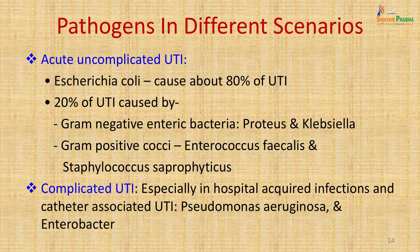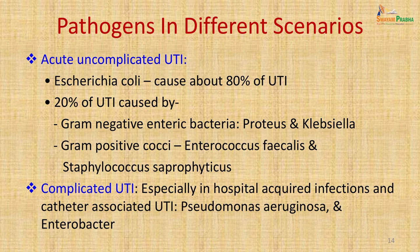Pathogens also differ by clinical scenario. In acute uncomplicated UTI, Escherichia coli causes about 80 percent of infections; 20 percent are caused by other gram-negative enteric bacteria such as Proteus and Klebsiella, as well as gram-positive cocci like Enterococcus faecalis and Staphylococcus saprophyticus. In complicated UTI, especially hospital-acquired or catheter-associated infections (CAUTI), Pseudomonas aeruginosa and Enterobacter are more commonly seen.